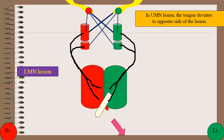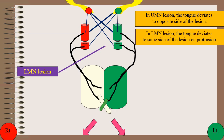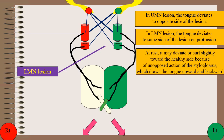Suppose there is a lower motor neuron lesion involving the right hypoglossal nerve. There will be involvement of all intrinsic and extrinsic muscles on the right side of the tongue, and there will be sparing of the left genioglossus muscle, which will lead to deviation of the tongue towards the right side. Therefore, in lower motor neuron lesions, the tongue deviates to the same side of the lesion on protrusion, and at rest it may deviate or curl slightly toward the healthy side because of the unopposed action of the styloglossus, which draws the tongue upward and backwards.